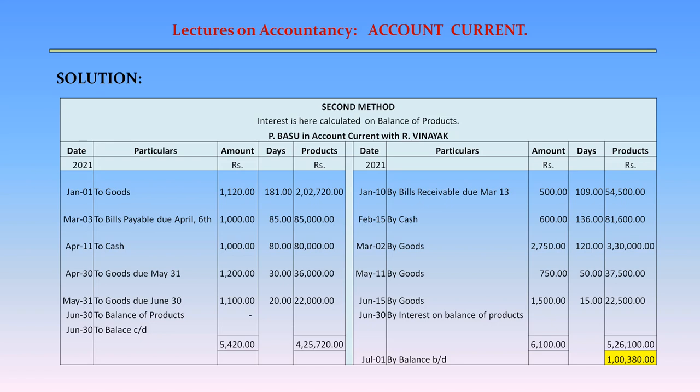April 11 — To cash: Rs. 1,000; Days 80; Products = 80,000. April 30 — To goods due May 31: Rs. 1,200; Days 30; Products = 36,000. May 31 — To goods due June 30: Amount Rs. 1,100; Days 20; Products = 22,000. Credit side: January 1 — By bills receivable due March 13: Amount Rs. 500; Days 109; Products = 54,500. February 15 — By cash: Rs. 600; Days 136; Products = 81,600. March 2 — By goods: Rs. 2,750; Days 120; Products = 3,30,000. May 11 — By goods: Rs. 750; Days 50; Products = 37,500. June 15 — By goods: Rs. 1,500; Days 15; Products = 22,500.